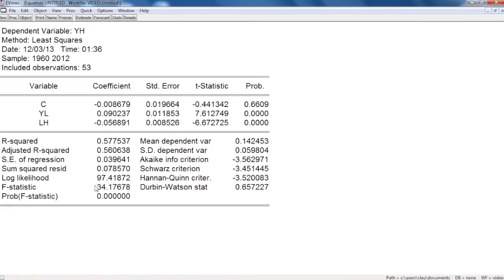We have an F statistic of 34.17 with a probability of 0.000, which allows us to reject the null hypothesis and conclude that the entire model is significant. Also, the independent variables are significant on their own because of the t statistic that they show.